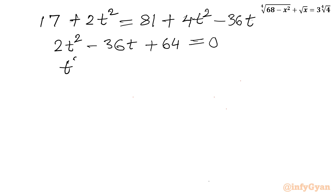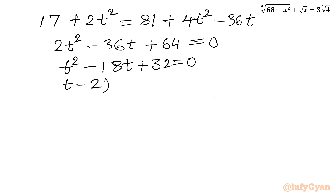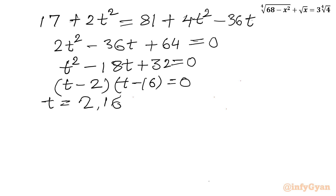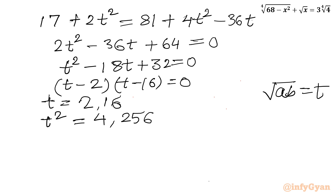The equation is divisible by 2, giving T² minus 18T + 32 = 0. Factorizing by splitting the middle term as minus 16 minus 2: (T minus 2)(T minus 16) = 0. So T = 2 or T = 16. Since T = √(AB), we have T² = AB, giving AB = 4 and AB = 256 for the two cases.